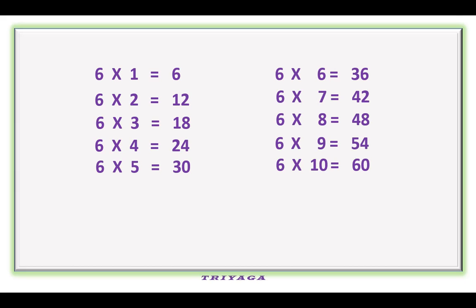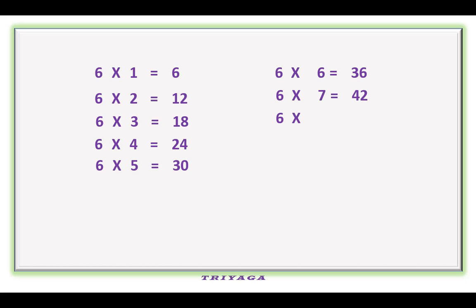Children, let's practice again. 6 1s are 6, 6 2s are 12, 6 3s are 18, 6 4s are 24, 6 5s are 30, 6 6s are 36, 6 7s are 42, 6 8s are 48, 6 9s are 54, 6 10s are 60.